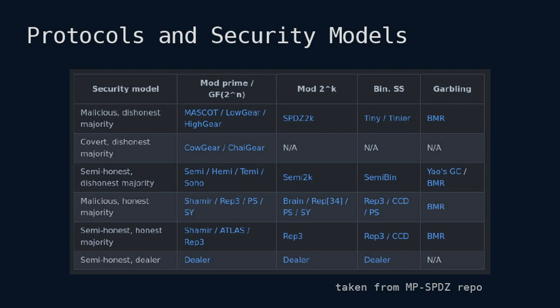This is an excerpt from the MP-SPDZ repo — I'll explain what MP-SPDZ is later — but I want to show you that there are different security models under which MPC works. We have malicious, covert, and semi-honest security models. Malicious means players don't stick to the protocol. Covert means they don't cheat when they know they'll be discovered cheating. Semi-honest means they just follow the protocol. Then you have different majority settings — honest and dishonest — and the field over which you are operating can be different. There are also some entirely different MPC protocols, like garbling, where you encrypt the circuit and send it around.